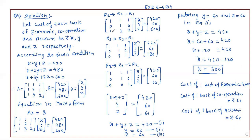Then R3 minus R1 gives: 0, 3 minus 1 is 2, 2 minus 1 is 1, and 600 minus 420 is 180. Now we change R3 to R3 minus 2 times R2: 0, 2 minus 2 is 0, 1 minus 2 times 0 is 1, and 180 minus 2 times 60 equals 180 minus 120, which is 60.